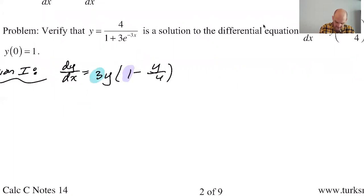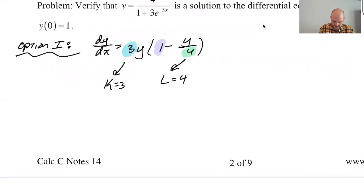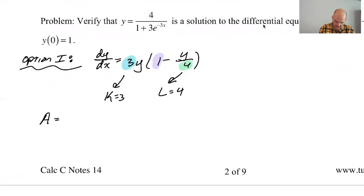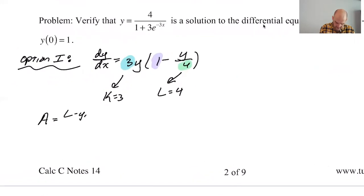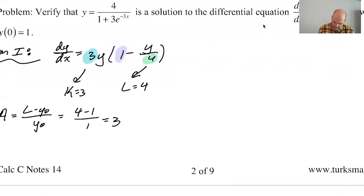And I know automatically that this is L. So L equals 4. And then I know that A is going to be L minus y0 over y0, which is 4 minus 1 over 1, which is 3. So then the solution should be Y equals L, which is 4 over 1 plus A, which is 3e to the negative K, which is 3t.